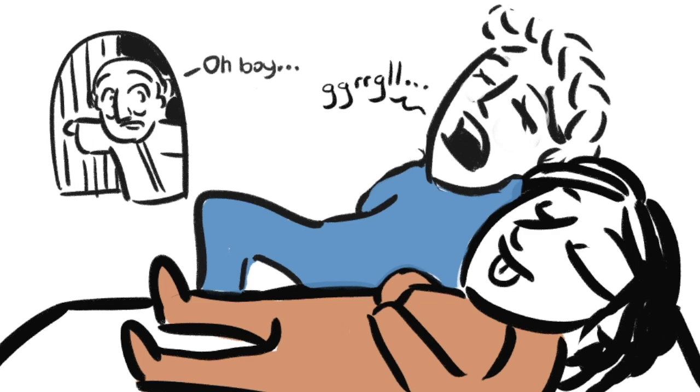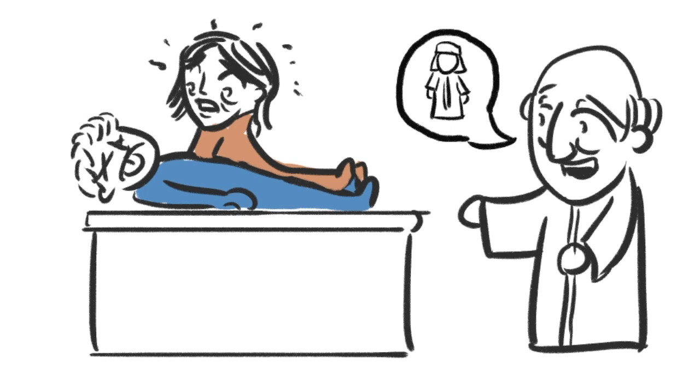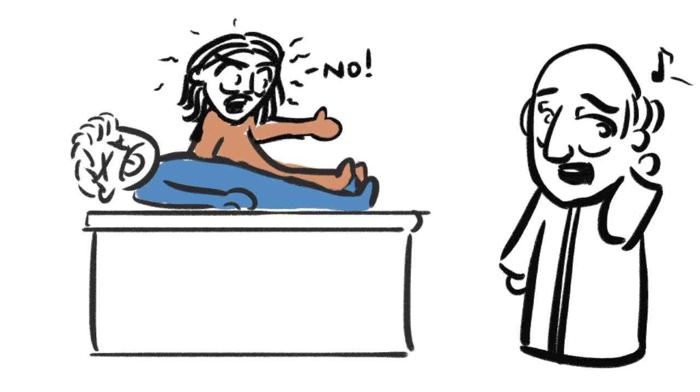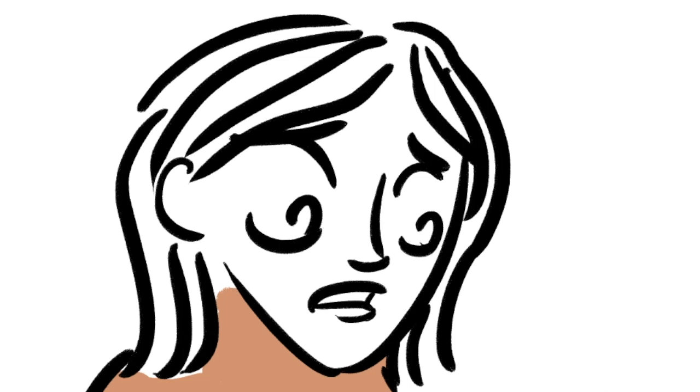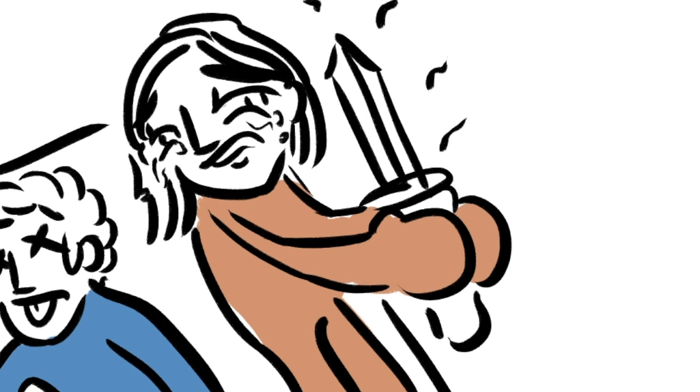Friar Lawrence enters the tomb and sees Romeo dead. Juliet wakes up. Oh, man. Friar Lawrence decides Juliet should become a nun now. Juliet doesn't like this plan. Friar Lawrence hears a sound and leaves. Because she has literally no options left in life other than becoming a prostitute or a nun, she takes his dagger and kills herself.